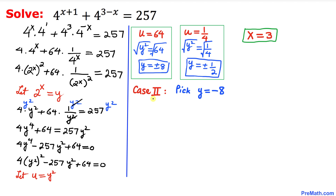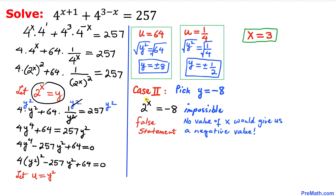Case 2: y = −8. We have 2^x = −8, but 2^x cannot equal a negative number — this is a false statement and is impossible, so we reject this case. There is no solution here.